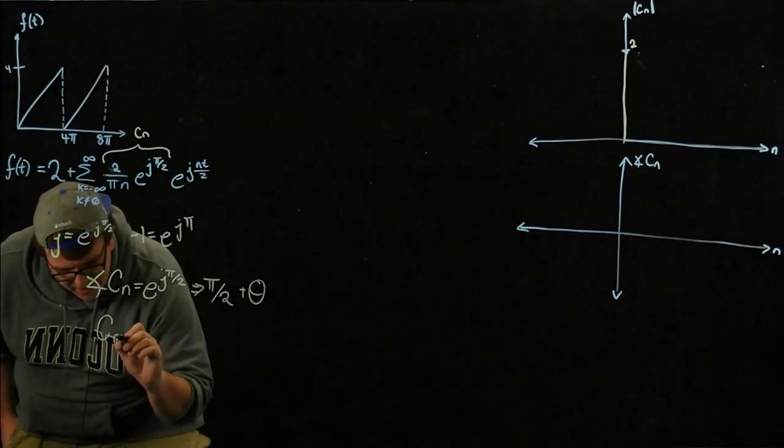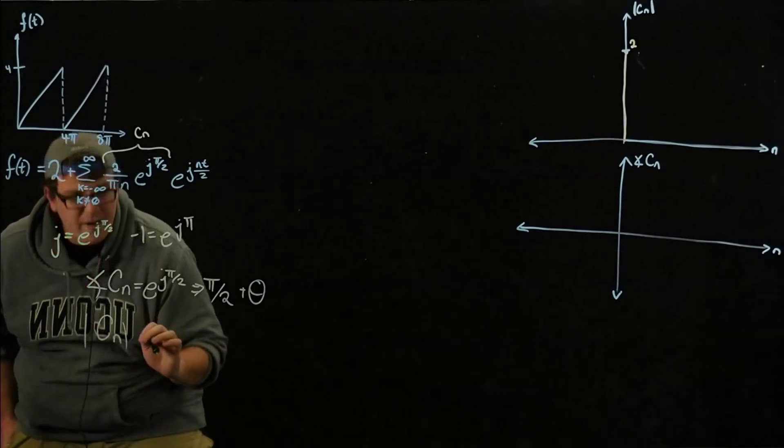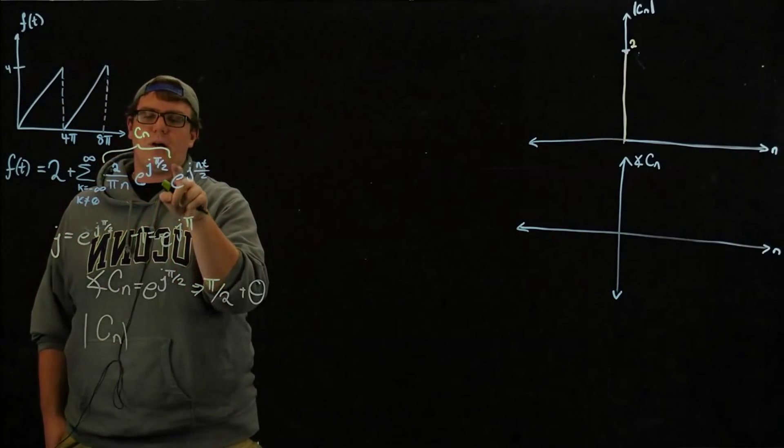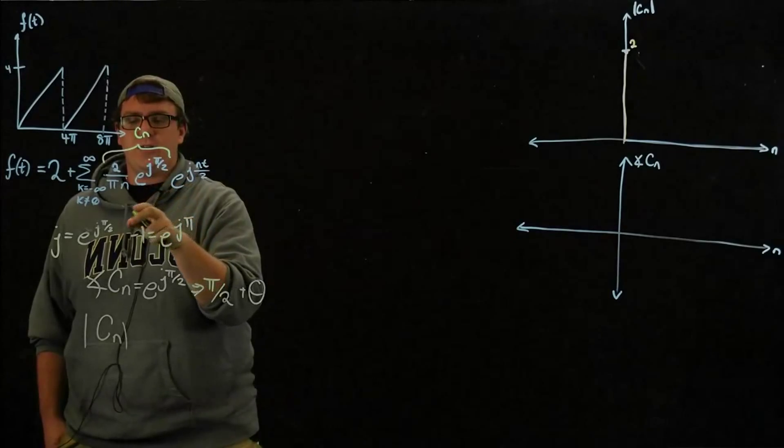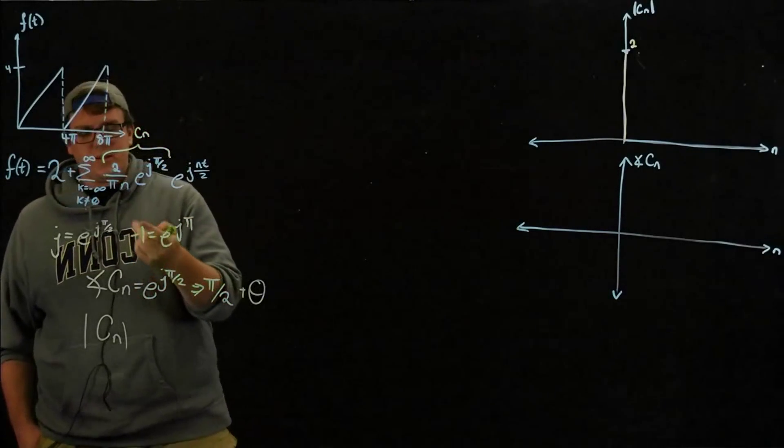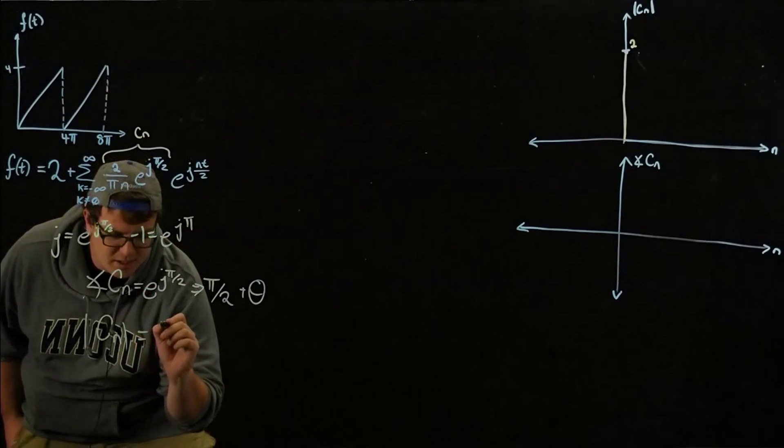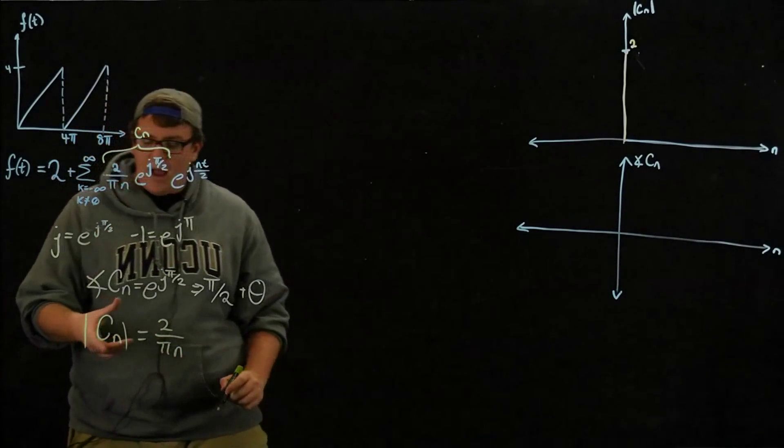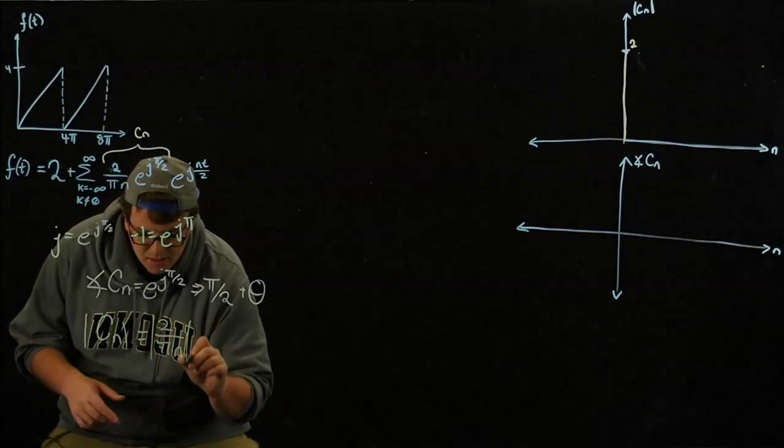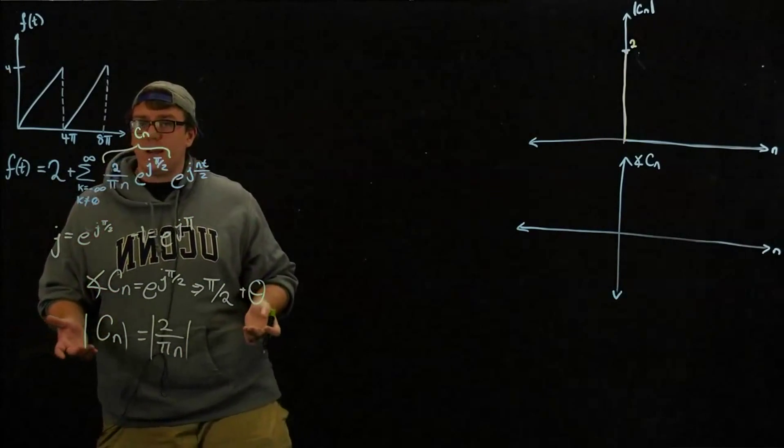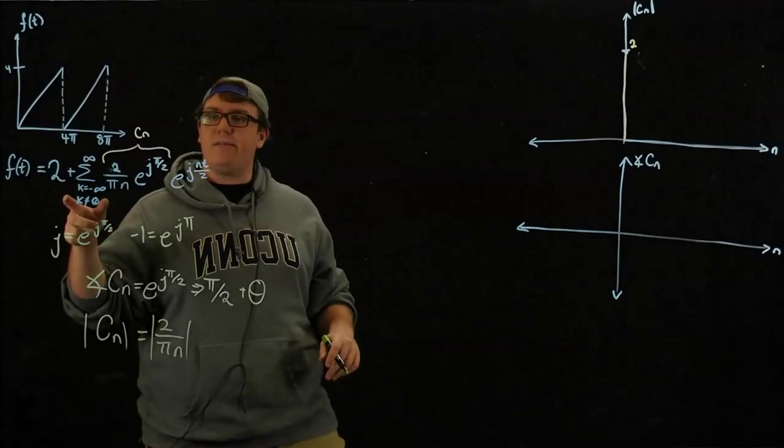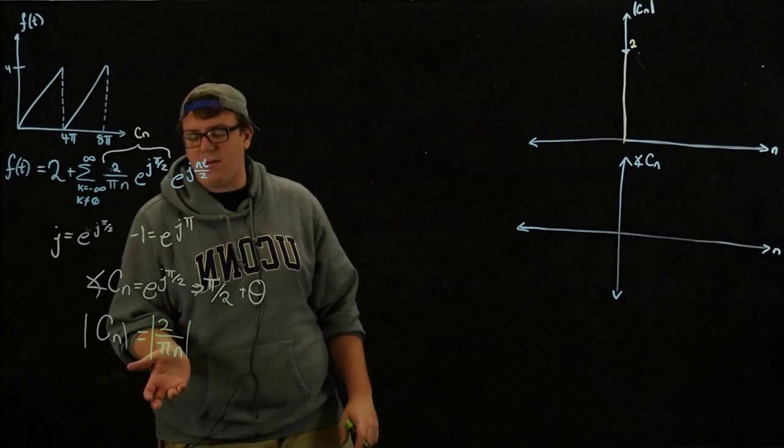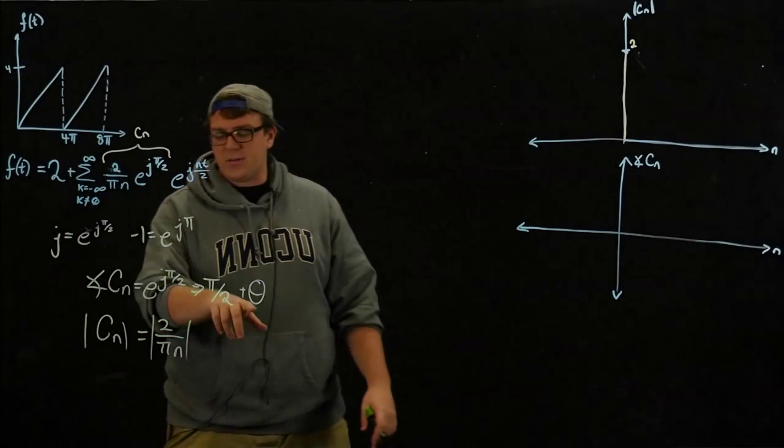And I'm going to add this plus theta here for a reason I'll talk about later. The magnitude of CN, on the other hand, is what's multiplying your e-function here, or what we call the modulus. So the modulus here is just 2 over pi N. But we want the absolute value of this. But what you might be thinking now is N goes from negative infinity to positive infinity. How do you account for the negative here? Well, that's what this theta is.